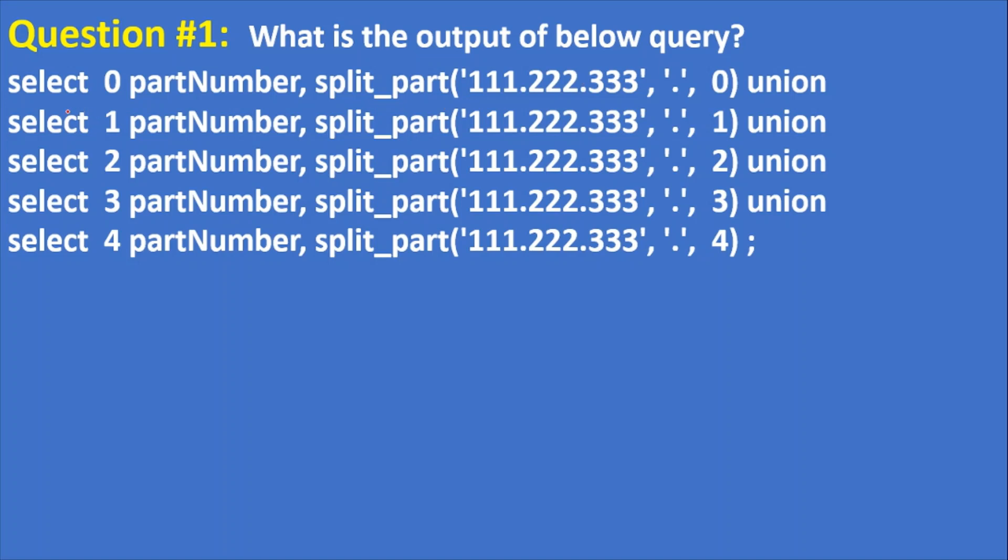Question 1: What is the output of below query? Here is the query: select 0 partNumber, split_part with string split by period operator and the position from that string, union. Like that I have given four queries from the same string but positions are different. Basically split_part splits the given string by specified character and returns the required part. So now here zero part, first part, second part, third part, and fourth part. Please note that the given string has only three parts: part one, part two, part three, separated by dot or period.